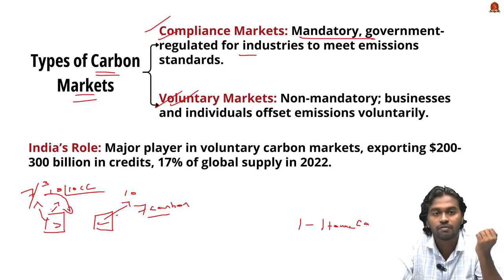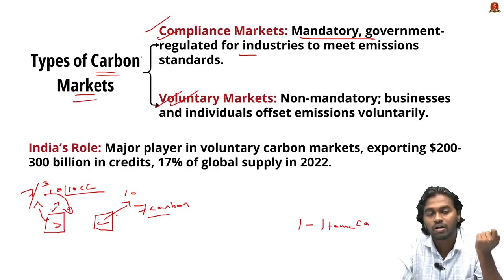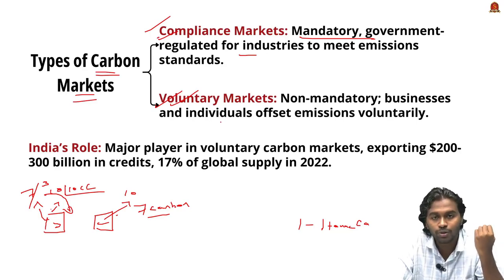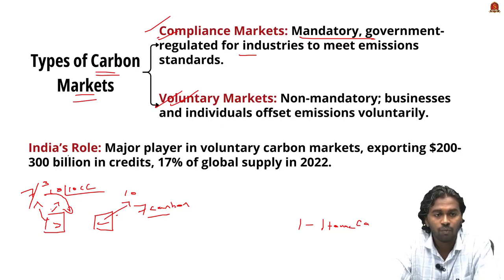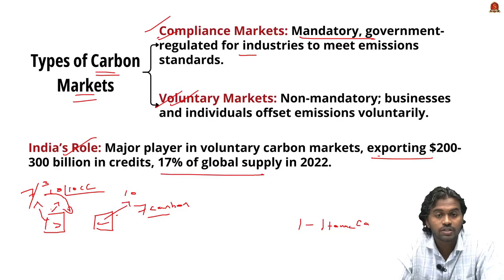Our Finance Minister has also mentioned the importance of a carbon credit trading system, and India is working to establish one combining elements of both compliance and voluntary markets. Voluntary markets promote ecological balance and corporate social responsibility. India is a major player in voluntary carbon markets, exporting carbon worth $200–300 billion, representing approximately 17% of global carbon credit supply as of 2022.